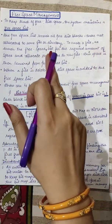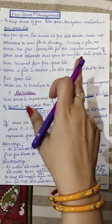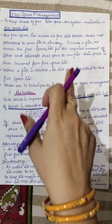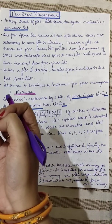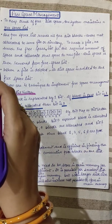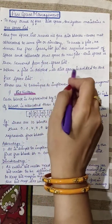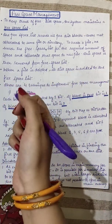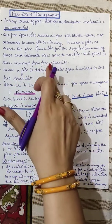To create a file, we search the free space list for the required amount of space and allocate that space to the new file. This space is then removed from the free space list. The free space list holds entries for space not allocated to any files. When a file is deleted, its disk space is also added back to the free space list.